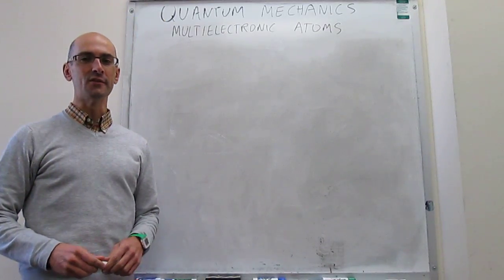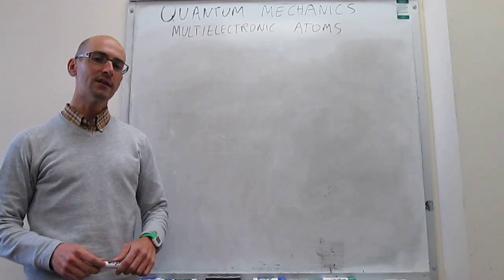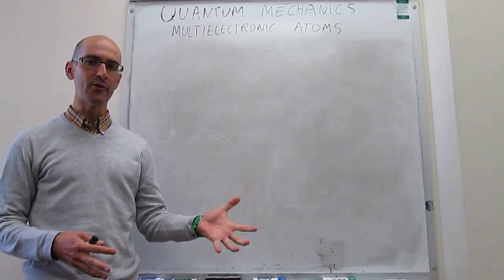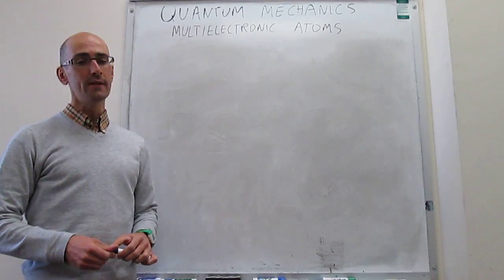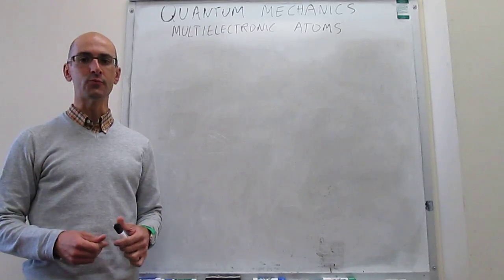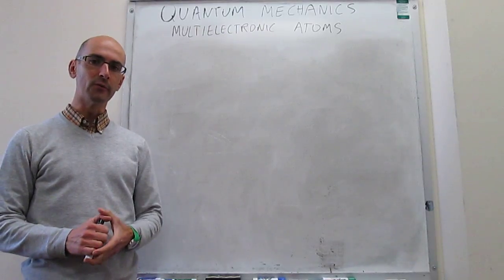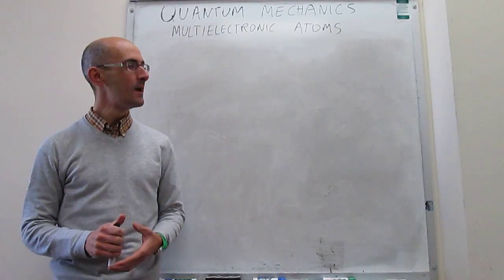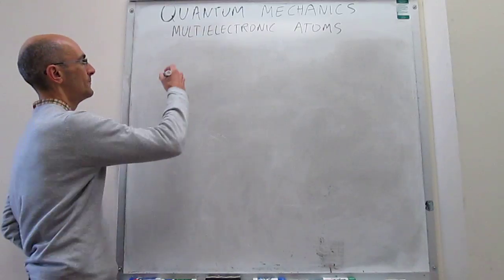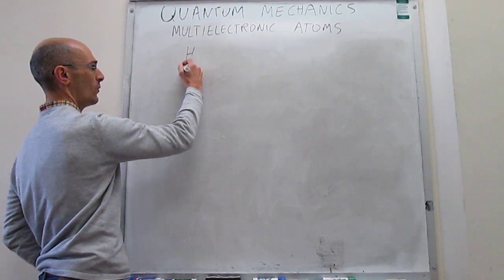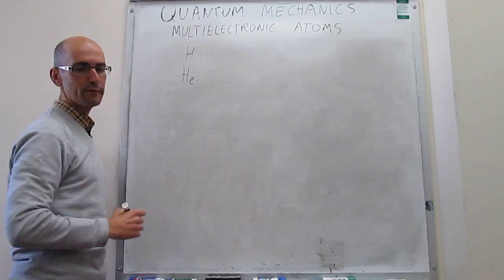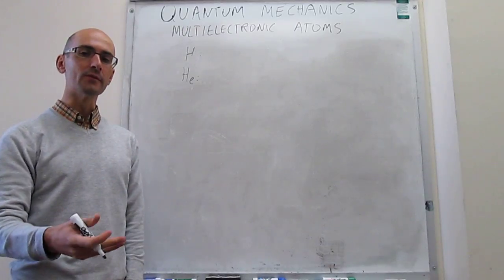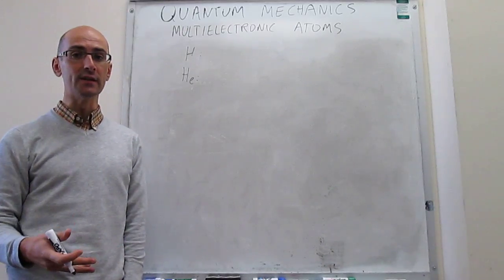In this video we continue our discussion of the electronic structure of multi-electronic atoms. We have seen in prior videos what the electronic structure for the hydrogen atom and the helium atom are. What we're going to do here is try to continue to learn what the electronic configurations are for atoms beyond helium in the periodic table. The way that we express electronic configurations for atoms is to take a look at the wave functions of electrons and express them in the simplest way that we can think of.